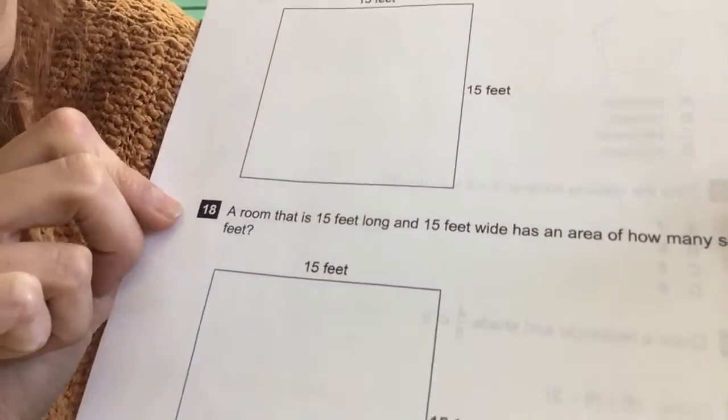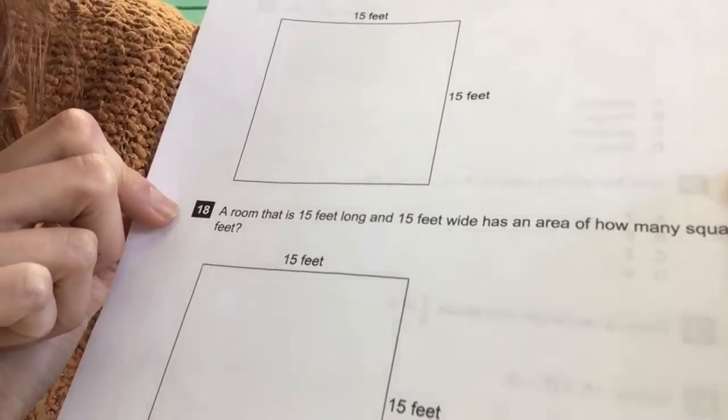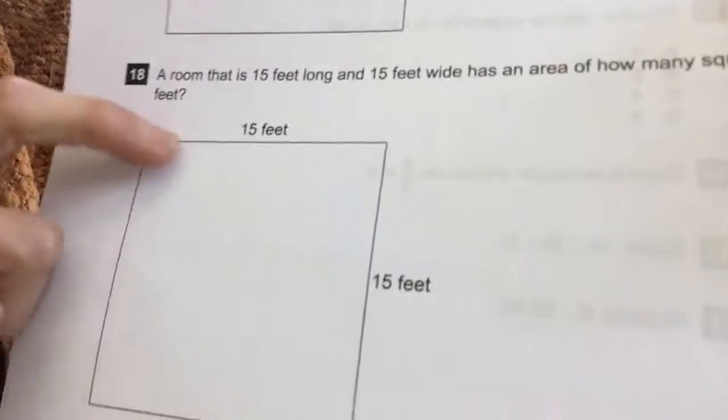Eighteen. A room that is fifteen feet long and fifteen feet wide has an area of how many square feet? We know what area is. Length times the width.